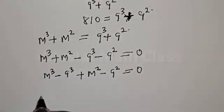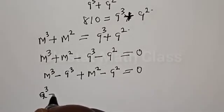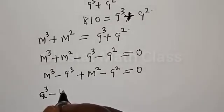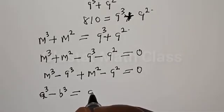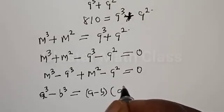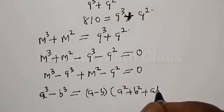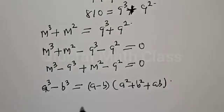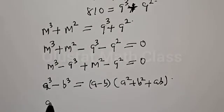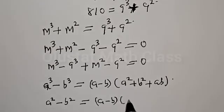Now remember, if you have A³ minus B³, it is the same thing as A minus B multiplied by A² plus B² plus AB. Also, if you have A² minus B² it is equal to A minus B multiplied by A plus B.